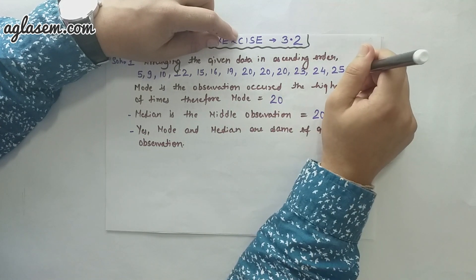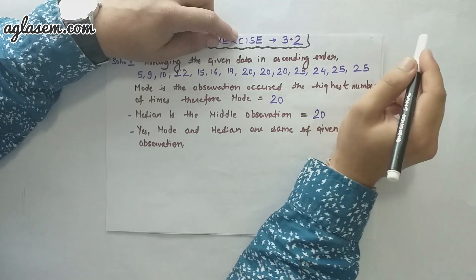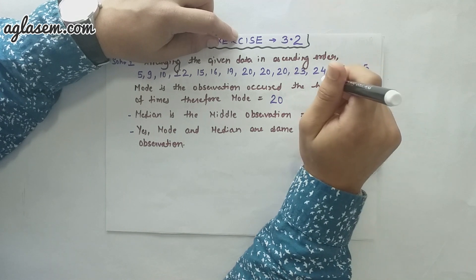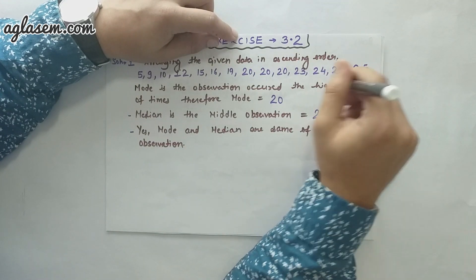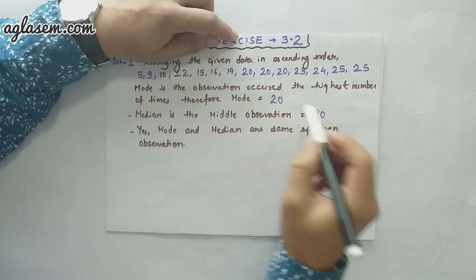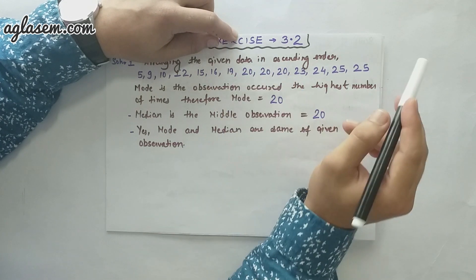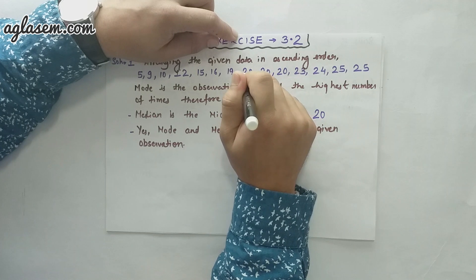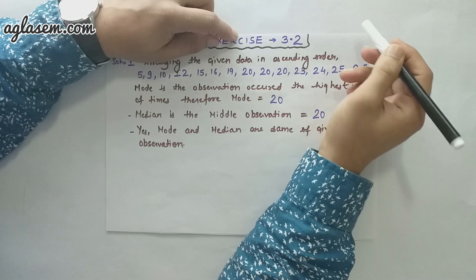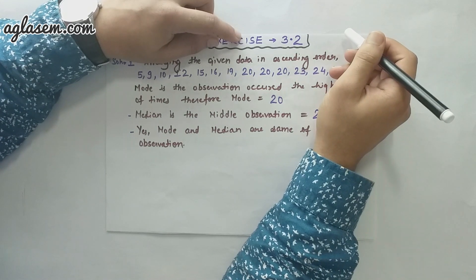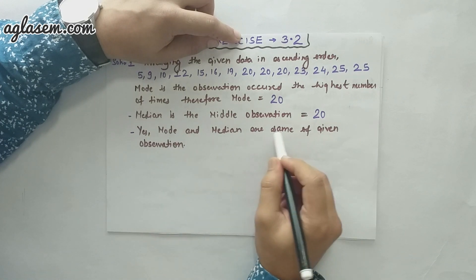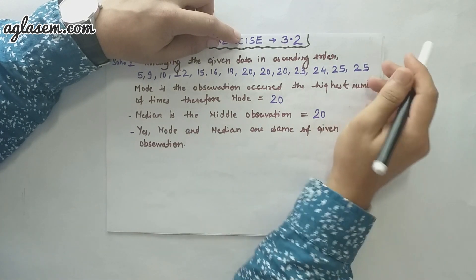Next, we have to find the median of this data. What is median? Median is the middle observation — the number which is in the middle of the data. The median is 20 because 20 is the center point, or the middle number, of this data series. And the last part of this question asks: are they the same? Yes, the mode and the median are the same for the given observation.